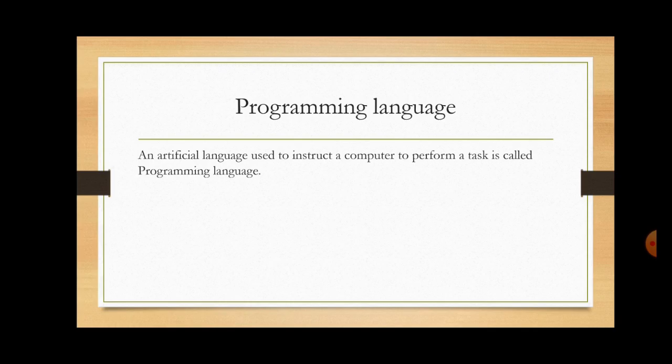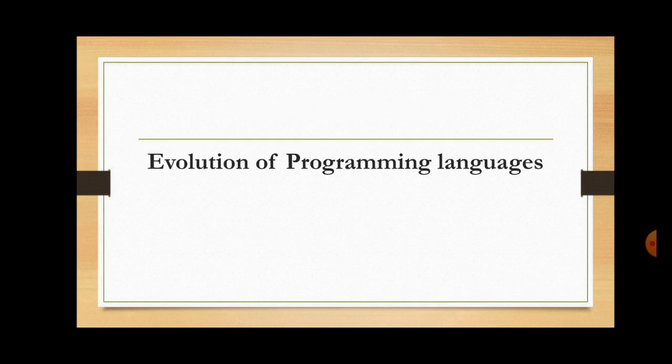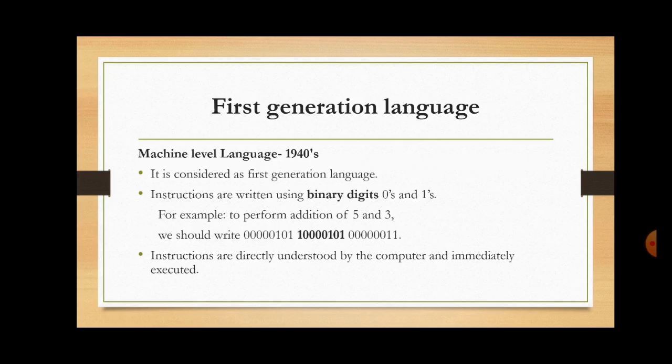With the evolution of computers, programming languages also evolved. Let us now discuss the evolution of programming languages. Late in the 1940s, a language called machine level language was used to instruct the computer. It is considered as the first generation language.